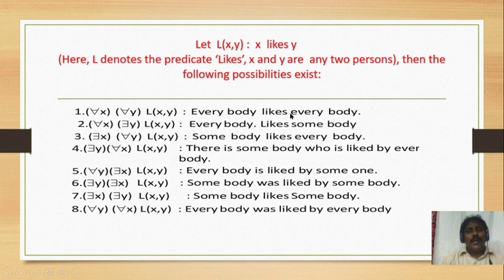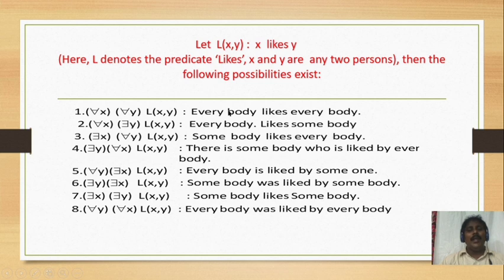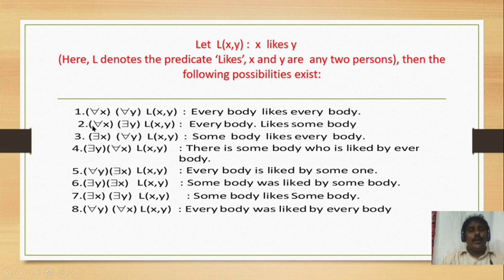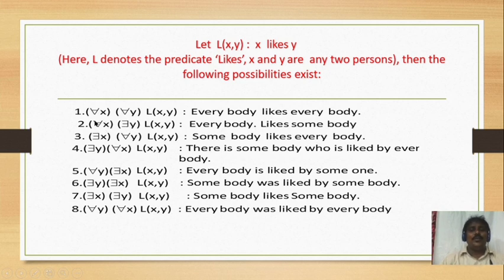Using quantifiers with l(x, y), the following possibilities occur. First: ∀x ∀y l(x, y) means everybody likes everybody — both x and y are universally quantified. Second: ∀x ∃y l(x, y) means everybody likes somebody — for all x (universal) and there exists y (existential).